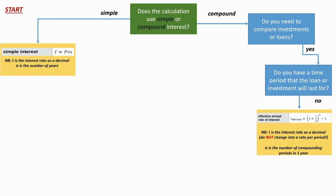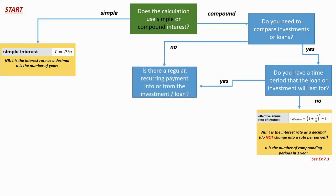If you're still comparing two loans but you've got different amounts of money, different terms, or different repayments, you'll move to the next question, which is the same question you'd ask even if you're not comparing investments and loans: is there a regular recurring payment into an investment or a loan, or out of an investment and loan? If the answer is no, you're probably going to jump for joy, because that just means you use the compound interest formula.